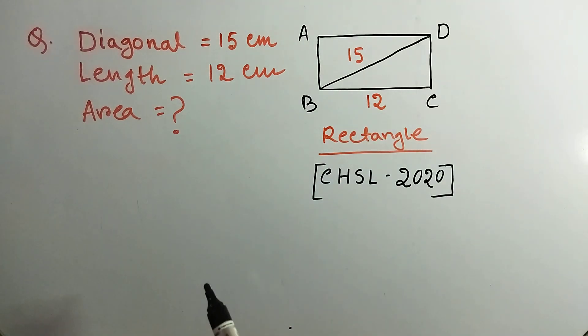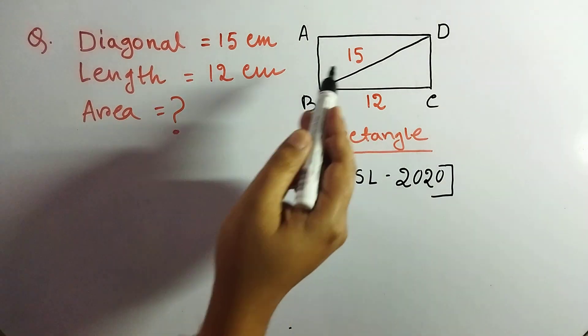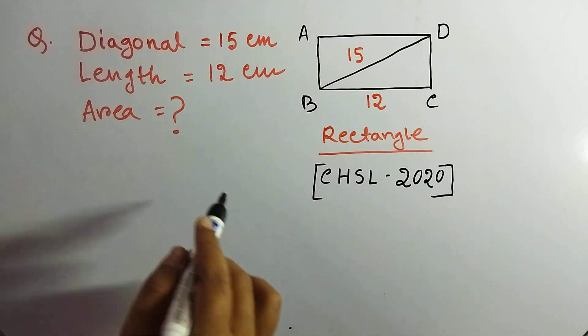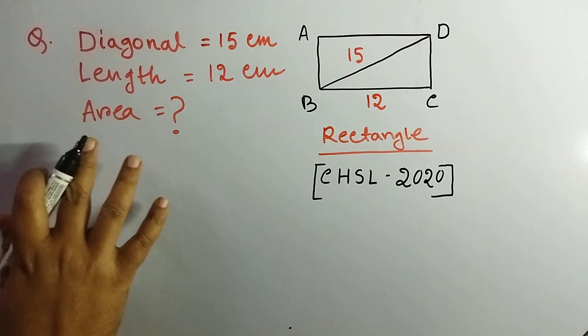This is a rectangle. The diagonal of the rectangle is 15 cm, length of the rectangle is 12 cm. Then what is the area of the rectangle?